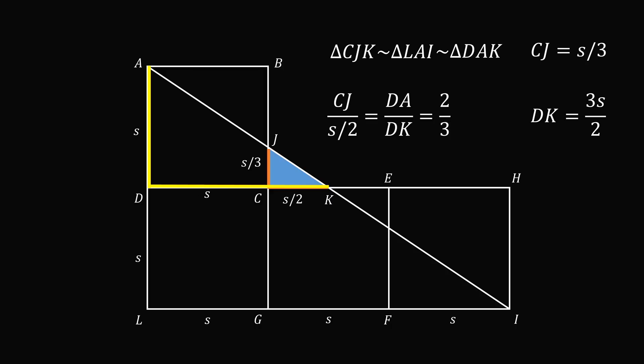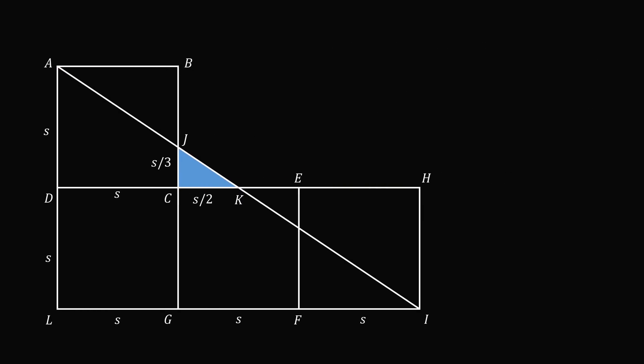So now, let's just focus on triangle CJK. We know that its area is equal to 1. But it's also equal to 1 half multiplied by S over 3 multiplied by S over 2. This simplifies to S squared divided by 12 is equal to 1. Which means S squared is equal to 12.